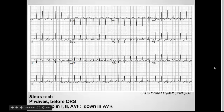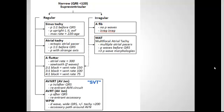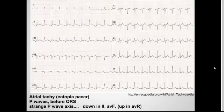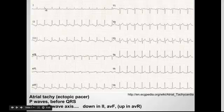Next is atrial tachycardia, which is going to be an ectopic atrial pacer. You're still going to have 1-to-1 P waves before your QRS, but the axis is going to be strange because it's coming from a different location. Here's the atrial tachycardia with an ectopic pacer — you again have P waves before each QRS, but looking at the axis: where it should be up in I, II, and aVF in sinus tachycardia, here you see it's down in II and aVF. You have a downgoing P wave and it's actually up in aVR — the opposite of sinus tachycardia.